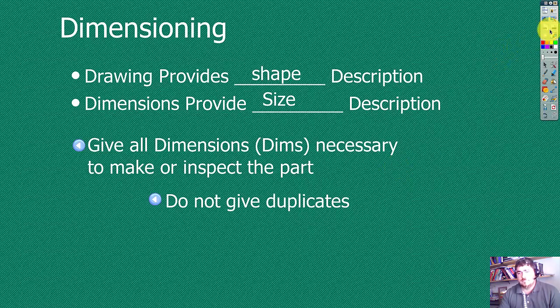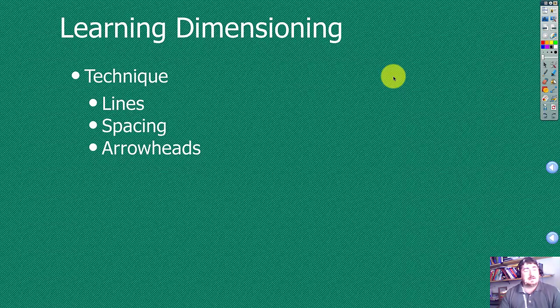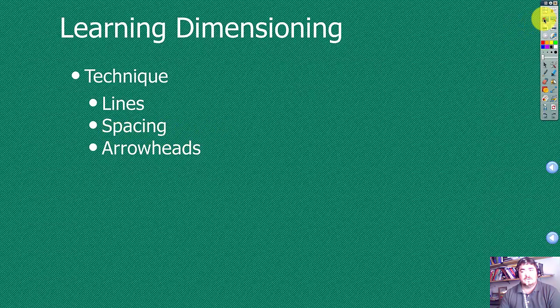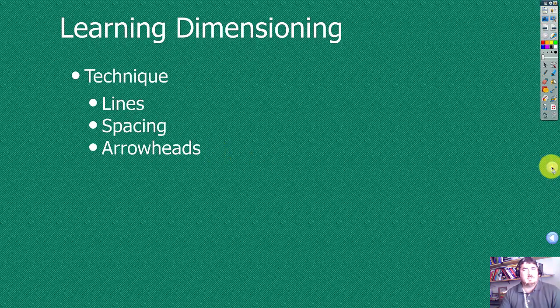In dimensioning, there's three main categories. There's the technique, where it's drawing the lines, the spacing between the lines, and the arrowheads. If we're using CAD, most of this is taken care of for us except for the spacing. When I go into Inventor and dimension this out, I get little guides that lock in at a measurement, and if you use those guides then you're gonna keep consistent spacing.